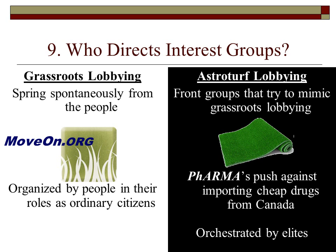The contrast is astroturf lobbying. Astroturf is that fake grass stuff — so it's fake grassroots lobbying. This is when front groups try to mimic grassroots lobbying, but it really didn't come from the people. For example, when Big Pharma did its push against importing cheap drugs from Canada, they made it seem like a huge swelling of popular opposition, but it was really orchestrated by an elite group with quite a bit of money, trying to make it look like a grassroots campaign when it was actually directed by a much bigger lobbying group.